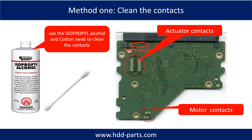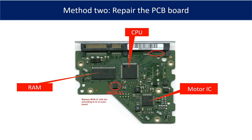Method one: clean the contacts. Cleaning the contacts on the PCB board and also on the hard drive can fix the problem caused by poor connection between the PCB board and the hard drive. This picture shows the basic components and their functions on the PCB board. You may use this picture as a reference to fix the PCB board. The most vulnerable parts on the PCB board are the power supply circuit and motor IC.